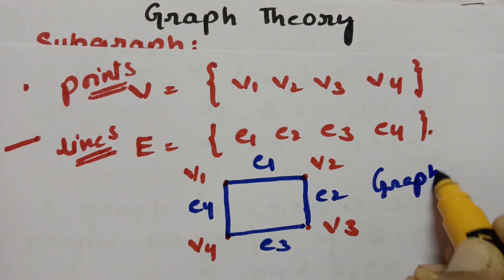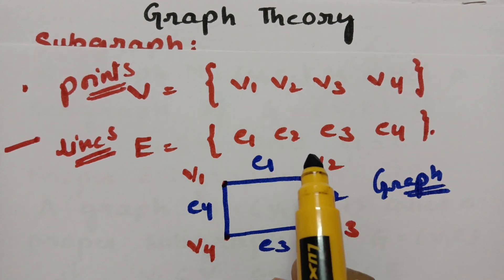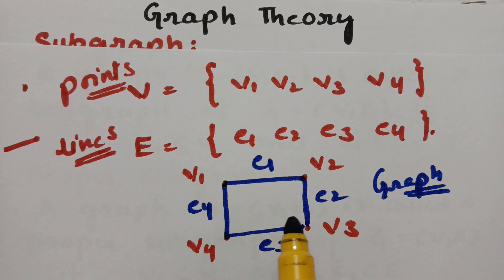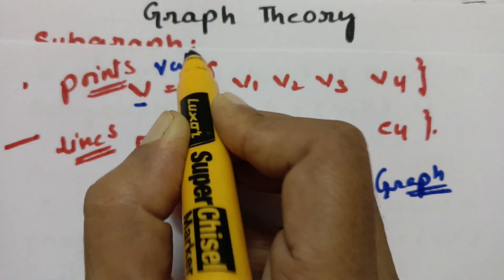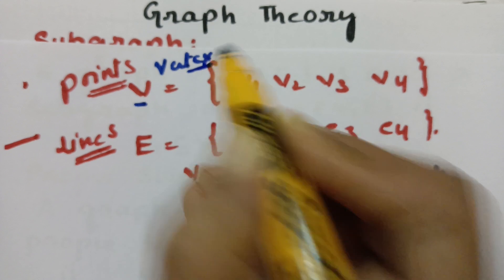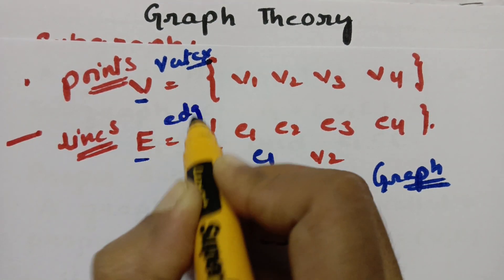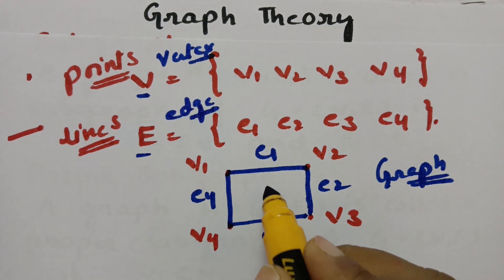So how is the graph formed? With the set of vertices and the set of edges, a graph is formed. This is the combination of points and lines — vertices and edges. In graph theory, we represent V as vertex and E as edge, and all together it is a graph G.